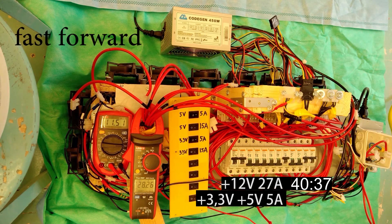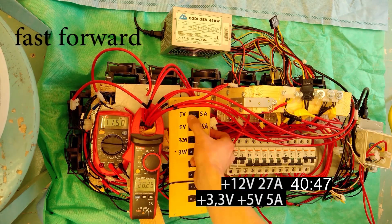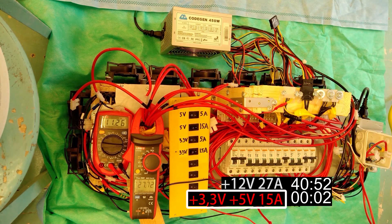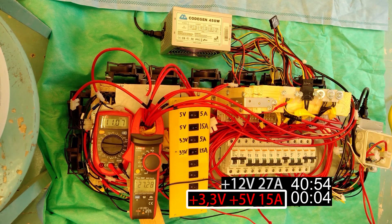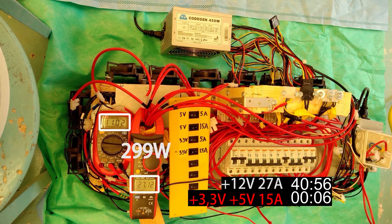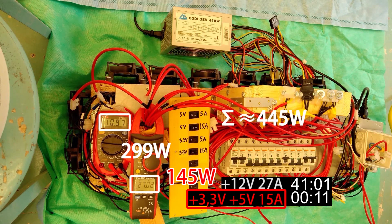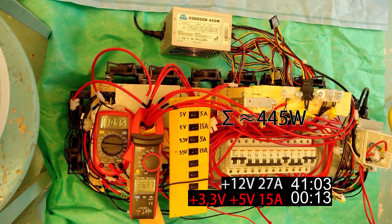Soon afterwards I will put this COAGEN to the test with 15 amps on the 3.3 and 5 volt rails each. This causes 12 volt rail voltage to plummet but the total power output increases to almost 450 watts.